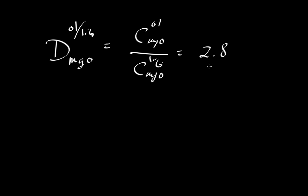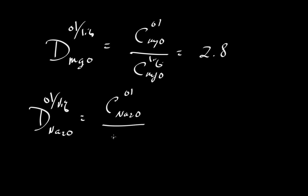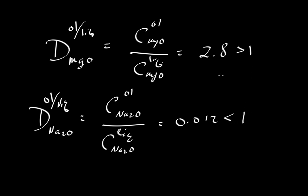Now let's look at another case: the oxide Na2O. If we do some experiments, the concentration of sodium oxide in olivine divided by the concentration of Na2O in a magmatic liquid is going to be much smaller than the MgO case — something like 0.012. This introduces the terminology: where D is much greater than 1, those elements are referred to as compatible; where D is much less than 1, they are referred to as incompatible.